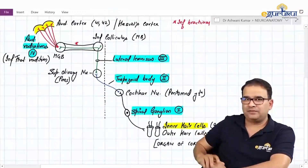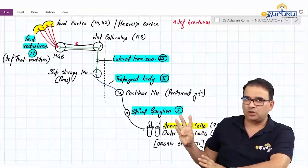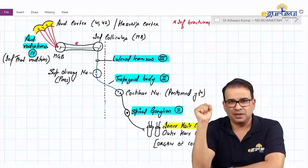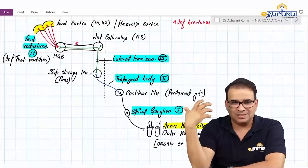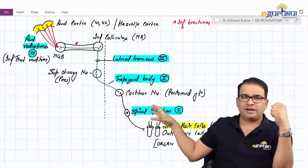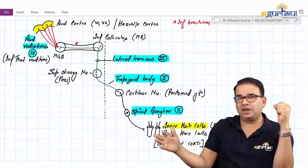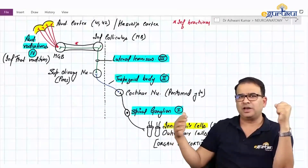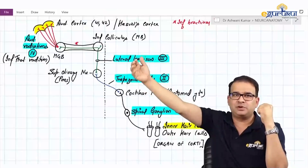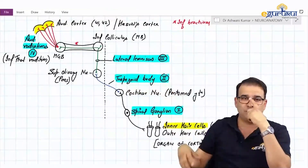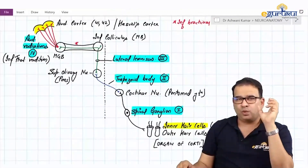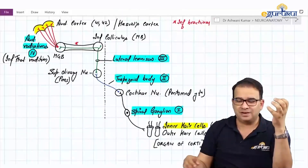In this auditory pathway, there are a few important things to note. First, we have a four-order neuron system: spiral ganglion, trapezoid body, lateral lemniscus, and auditory radiation. It is a very popular question to give you four options and ask you to arrange the pathway in sequence, so you should know each component from peripheral to central.